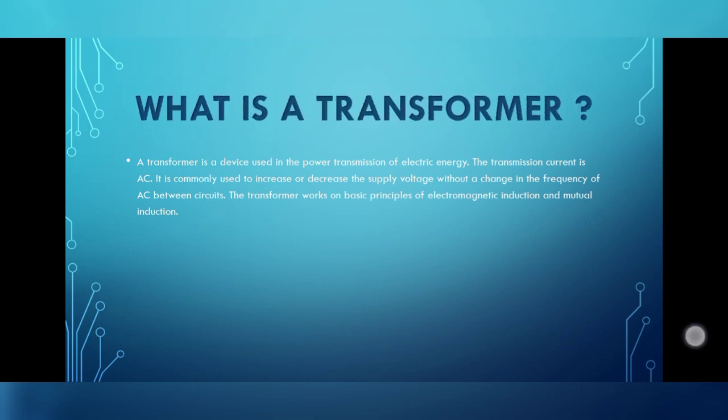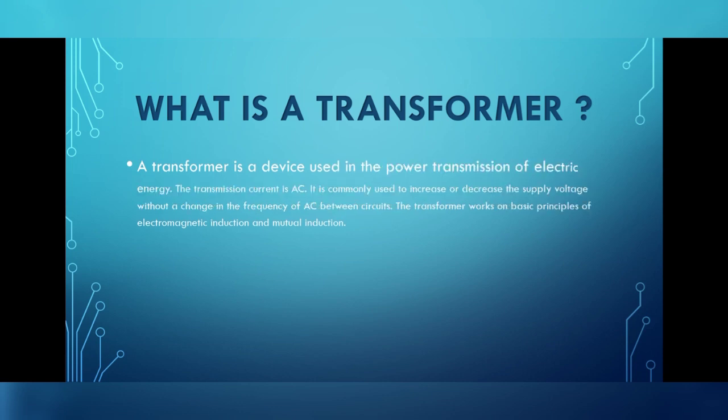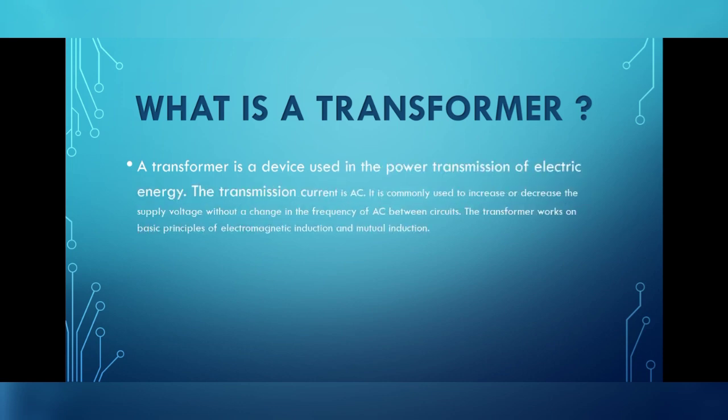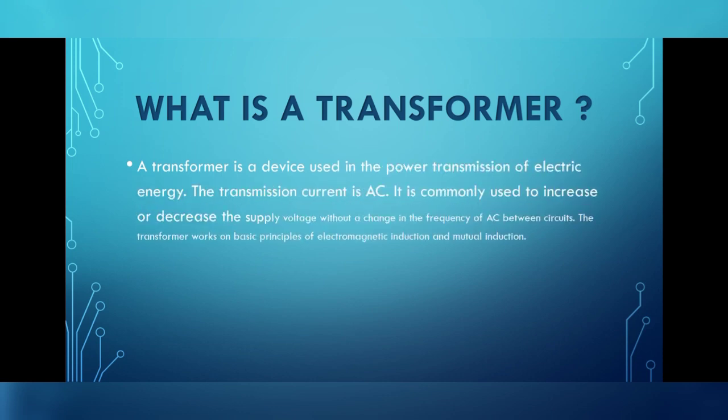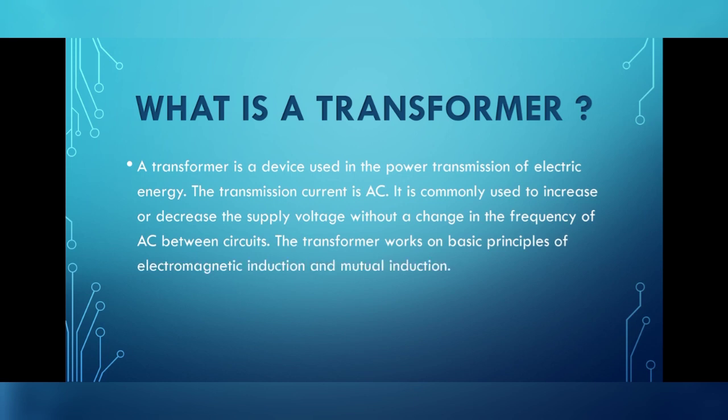A transformer is a device used in power transmission of electric energy. The transmission current is an alternating current. It is commonly used to increase or decrease the supply voltage without a change in frequency of alternating current between the circuits. The transformer works on basic principles of electromagnetic induction and mutual induction.